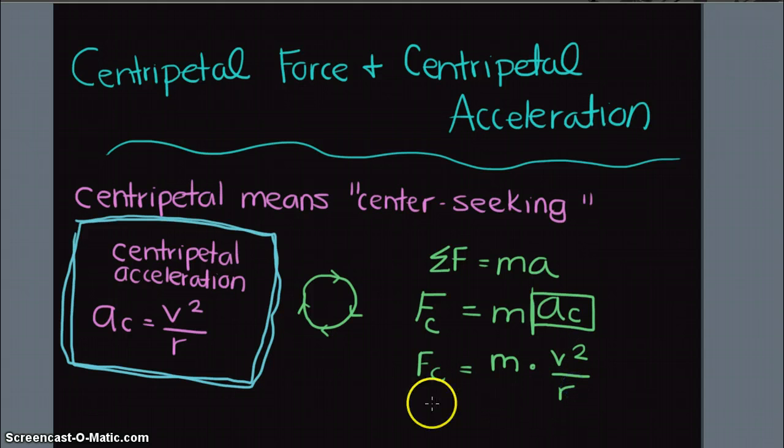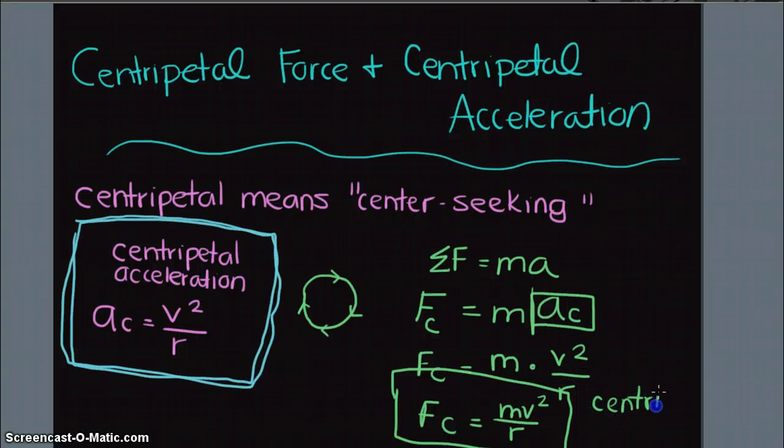Divided by r, we get centripetal force equals mv² over r. Now we have this second math model we can use for centripetal force.